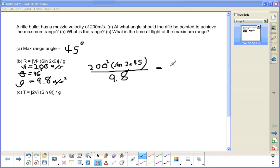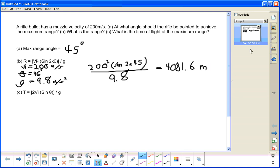The range equation is range equals initial velocity squared times sine 2 theta over gravity, which is just acceleration. Then you just plug it in, and you should get an answer, which is 4,081.6 meters.